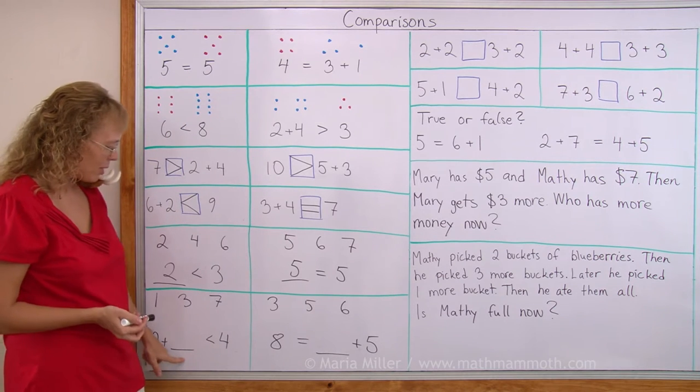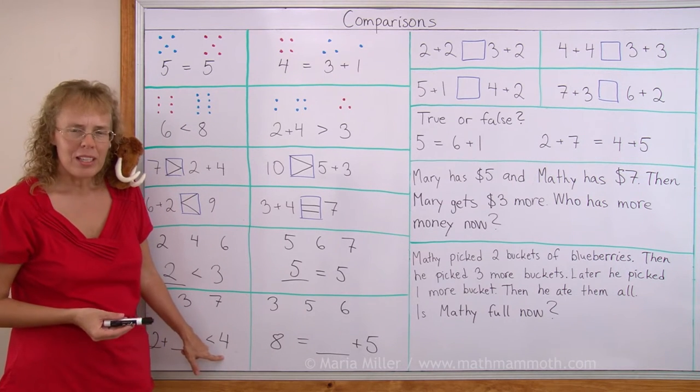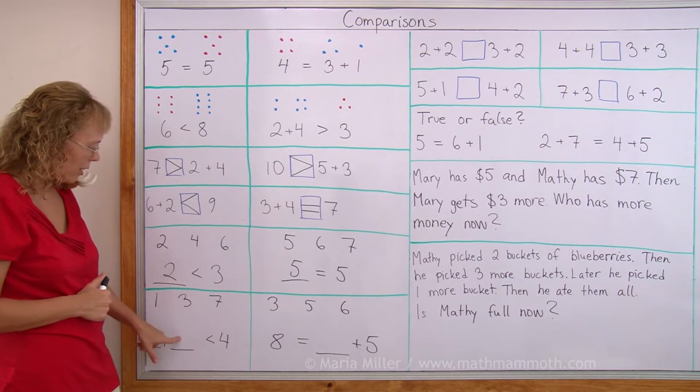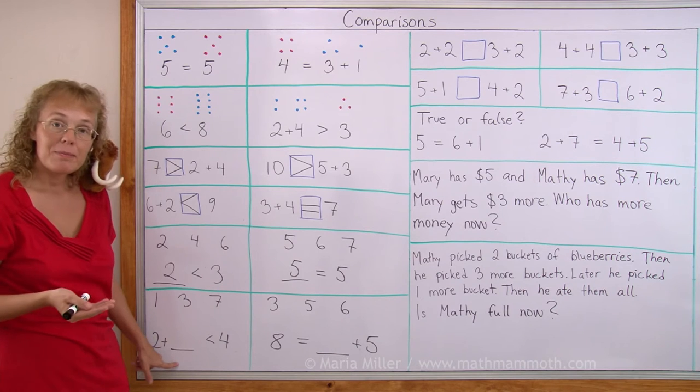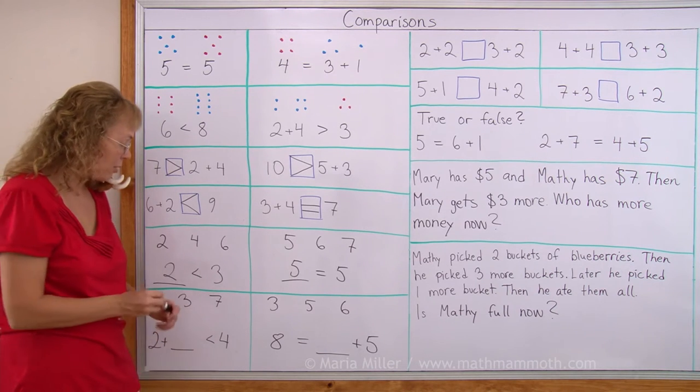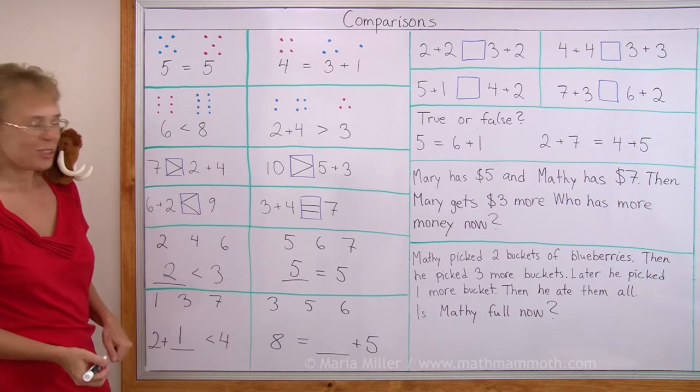Now here, 2 plus something is less than 4. Does this look difficult? Just try each number. If I put 1 here, 2 plus 1, that's 3. 3 is less than 4. So that works. I guess I don't need to try these two.